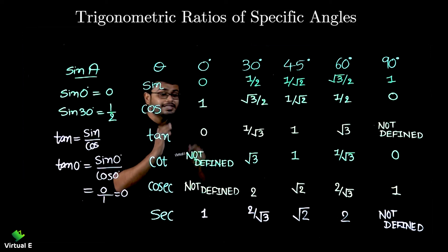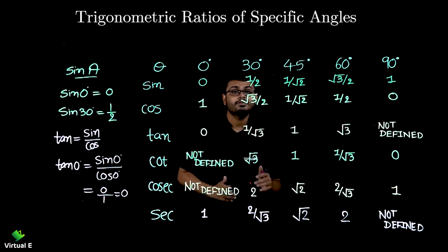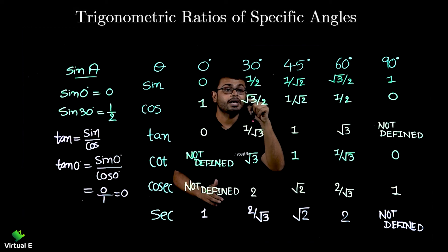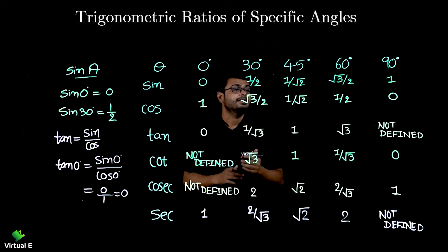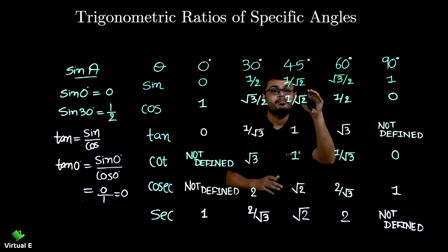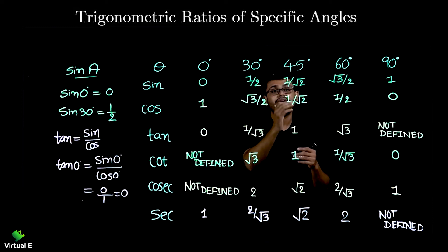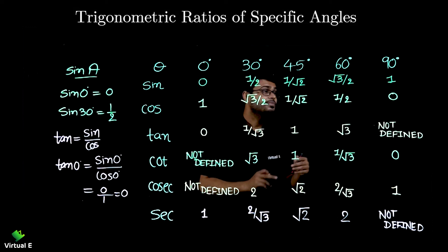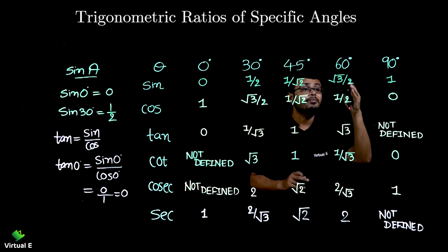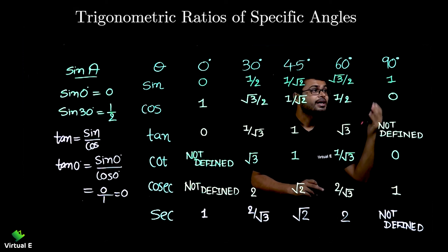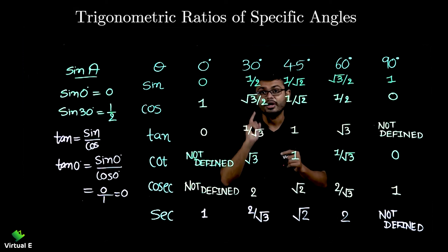In the same manner you can get the other values as well, like 1 by 2 divided by root 3 by 2, two gets cancelled so 1 by root 3. Then here 1 by root 2, 1 by root 2, division will be 1 because numerator and denominator is same. Here root 3 by 2, 1 by 2, two gets cancelled so root 3. And 1 by 0 is not defined.